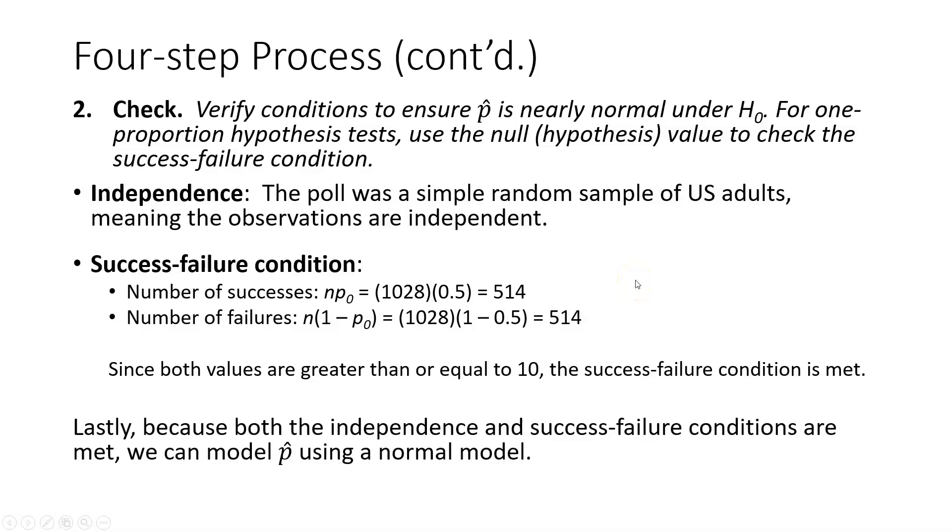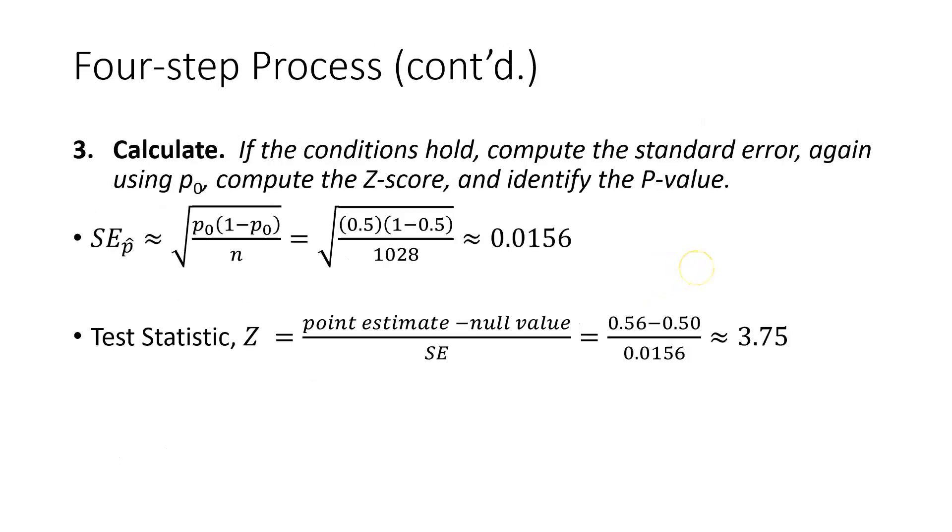We conclude our check part by stating that lastly, because both the independence and success-failure conditions are met, we can model the sampling distribution of sample proportions, P-hat, using a normal model.